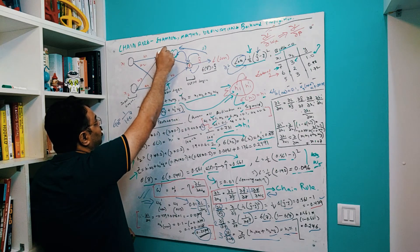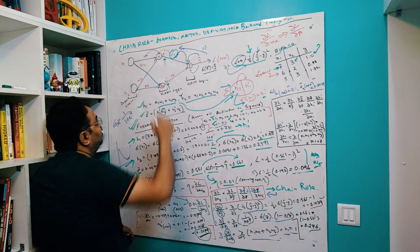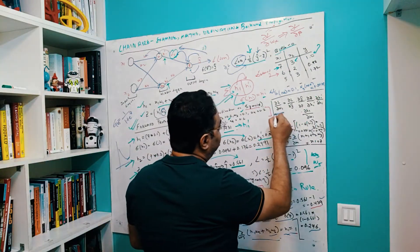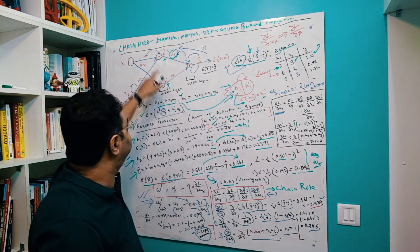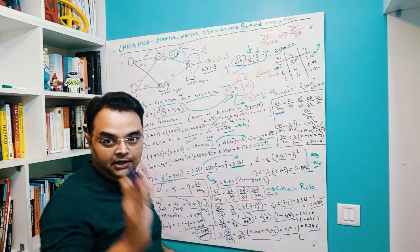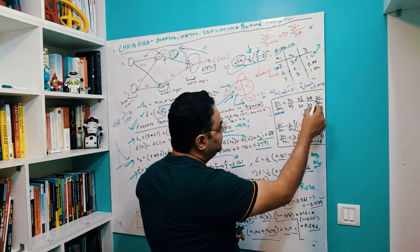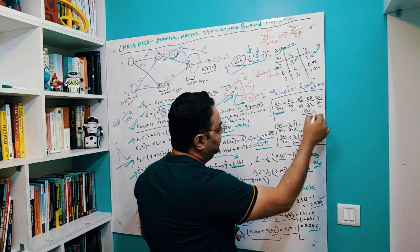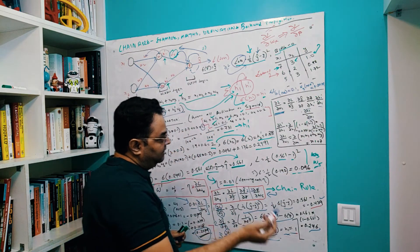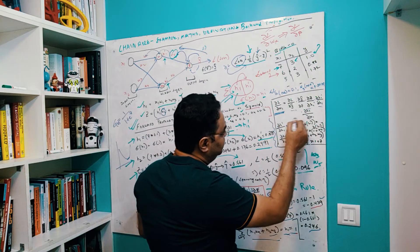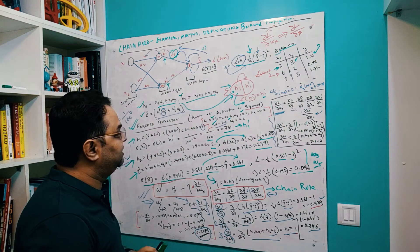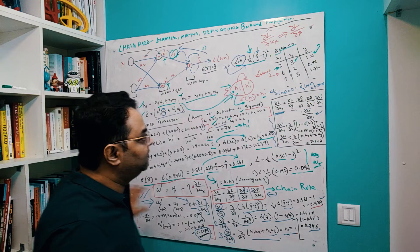Similarly, the error from w5 back-propagates further toward w1, between the hidden layer and the input layer. The first part of the chain rule remains constant and the chain rule is extended further. The formula is shown on the whiteboard and you can download the image from the description to work it out yourself.